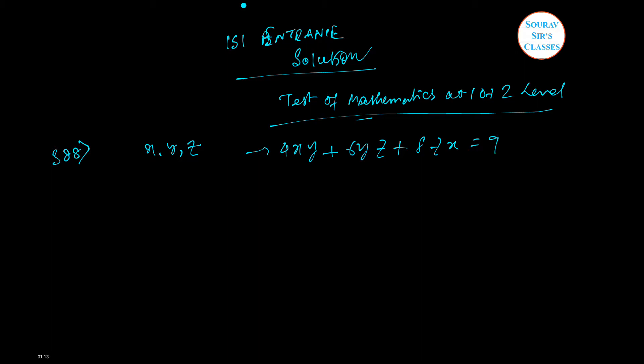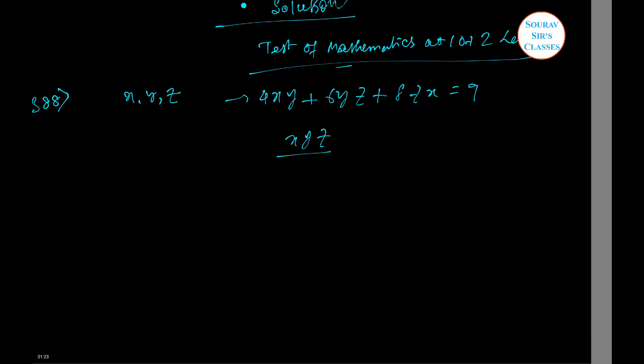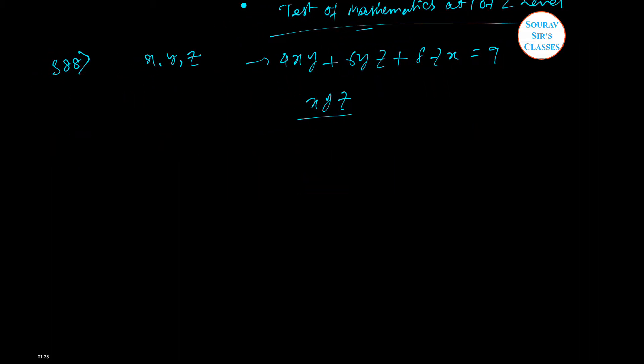Then they want the maximum possible value of the product XYZ. So we have one equation, three unknowns. We can't get a perfect value but we can get a structured form. Remember that when this kind of problem is given, you always have one option: AM-GM inequality.